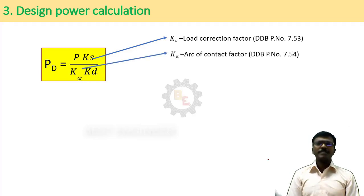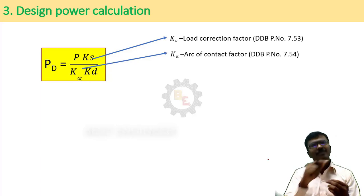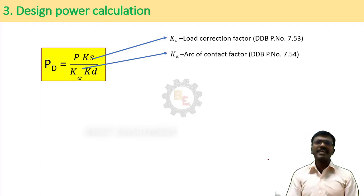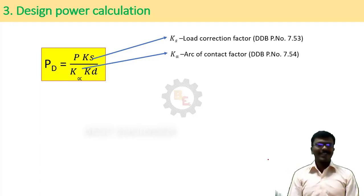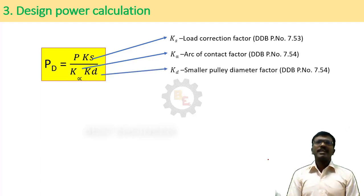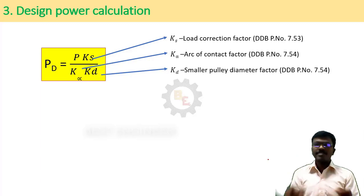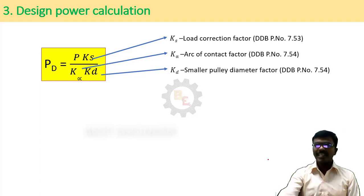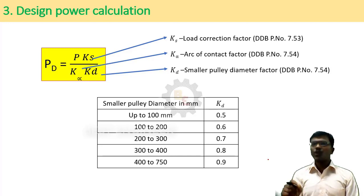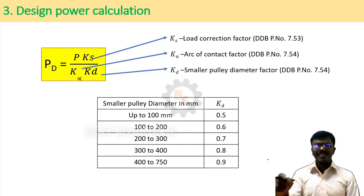Next is the small pulley diameter factor. If the driver pulley is very small, we must account for it, because if the pulley diameter reduces, the angle of contact is also reduced. This factor should be taken from a table: up to 100 mm the value is 0.5, and for values from 400 to 750 mm the value is 0.9. We have to take the appropriate value from that table.